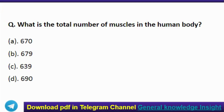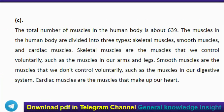The first question is: what is the total number of muscles in the human body? The correct answer is option C, 639. The total number of muscles in the human body is about 639. The muscles in the human body are divided into three types: skeletal muscles, smooth muscles, and cardiac muscles.